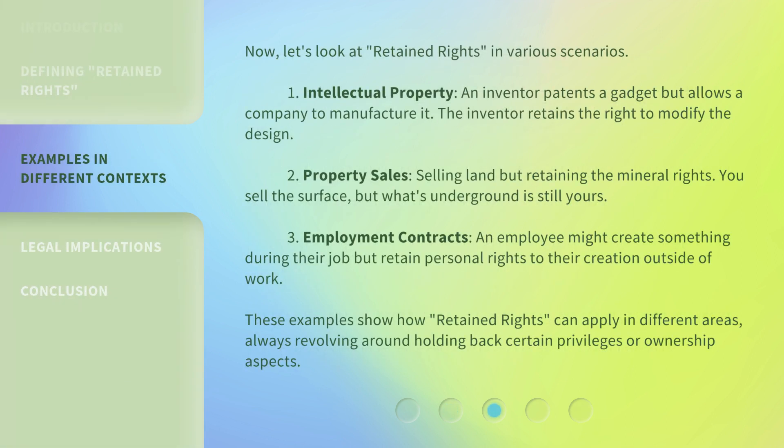Now, let's look at retained rights in various scenarios. 1. Intellectual property: an inventor patents a gadget but allows a company to manufacture it — the inventor retains the right to modify the design. 2. Property sales: selling land but retaining the mineral rights — you sell the surface, but what's underground is still yours. 3. Employment contracts: an employee might create something during their job but retain personal rights to their creation outside of work. These examples show how retained rights can apply in different areas, always revolving around holding back certain privileges or ownership aspects.